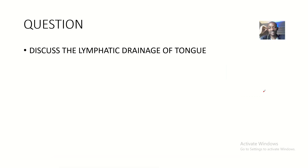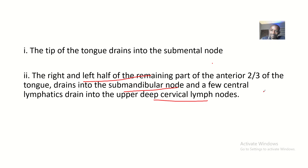That's it about the lymphatic drainage of the tongue — the submental lymph nodes, submandibular lymph nodes, cervical lymph nodes, jugulodigastric lymph nodes, and jugulo-omohyoid nodes. It was a short lecture. Next, we'll be talking about the venous drainage of the tongue. See you there!